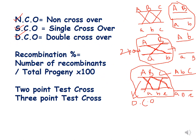Some important terms: NCO means non-crossover, SCO means single crossover, and DCO means double crossover. The recombination percentage formula is: number of recombinants divided by total progeny, multiplied by 100. There are also two types of test crosses — the 2-point test cross and the 3-point test cross. If three genes such as A, B, C are involved and crossing over takes place between non-sister chromatids of homologous chromosomes, recombinants are produced — this is called a three-factor cross. When two genes are involved, it is a two-factor cross.